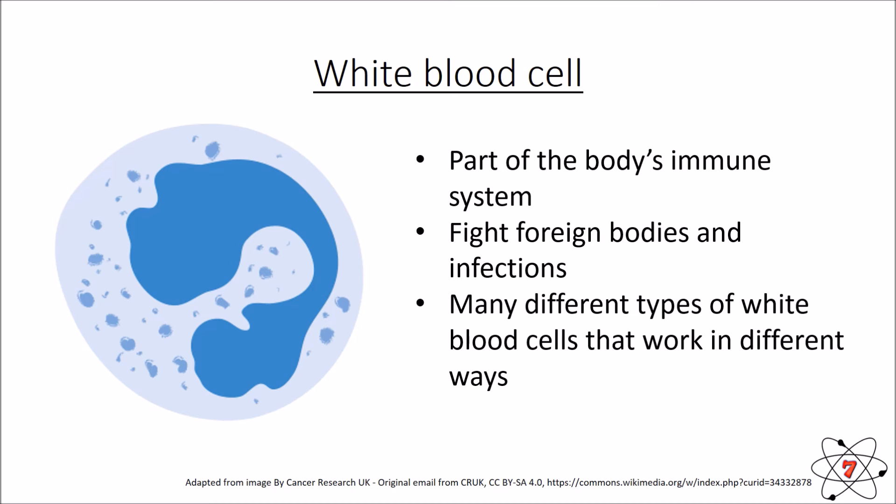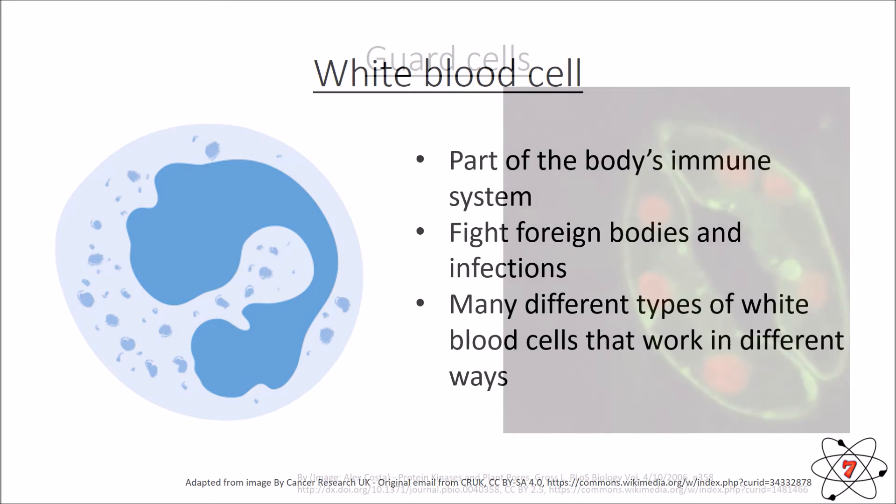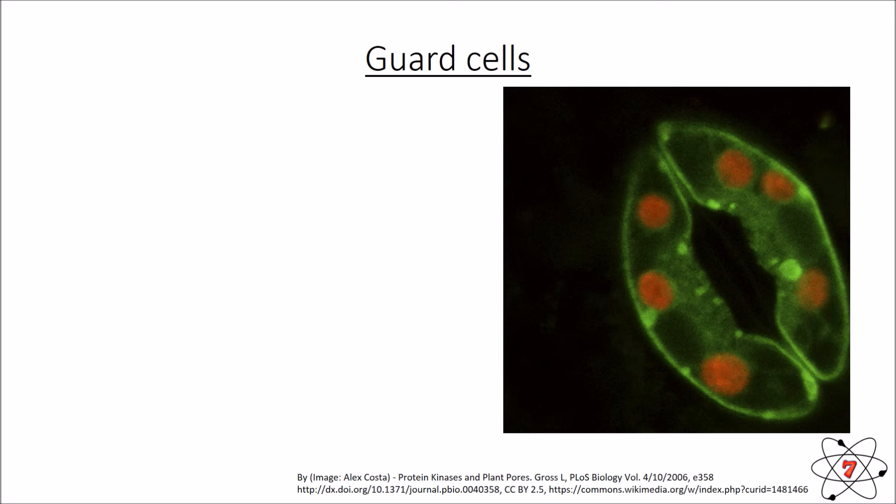These are just a few of the animal cells in our body. As I said, there are hundreds of different types — we don't need to know them all. But it's important to recognize when a cell is an animal cell and to think about its uses and how it is adapted to do its job. We're now going to look at some specialized plant cells.